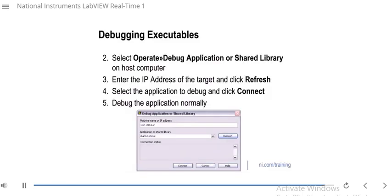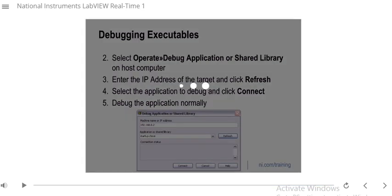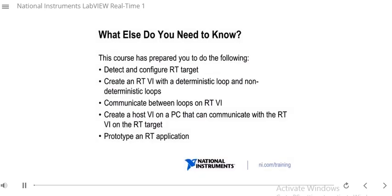Now you can communicate with a deployed RT application. Next, we will identify what skills you need to develop a successful real-time system and where to find resources to develop those skills. In the previous section, we communicated with a deployed RT application. By the end of this module, you will be able to identify what skills you need to develop a successful real-time system and where to find resources to develop those skills.